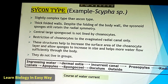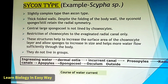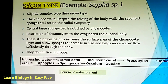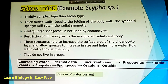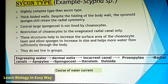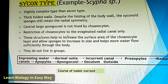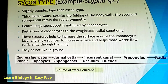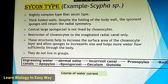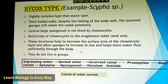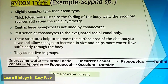Next, Sycon type — slightly more complex than Ascon type. These thick folded walls, despite the folding of the body wall, the syconoid sponges still retain radial symmetry. The central large spongocoel is not lined by choanocytes. Restriction of choanocytes to the evaginated radial canals only. These structures help to increase the surface area of the choanocyte layer, allowing sponges to increase in size and helping more water flow sufficiently through the body. They do not live in groups.